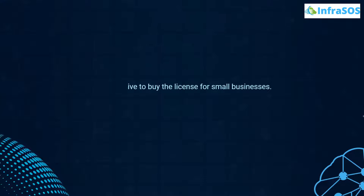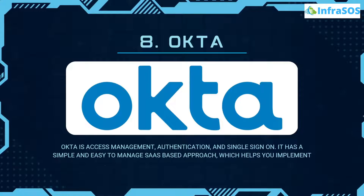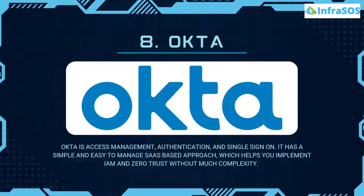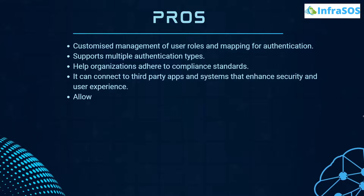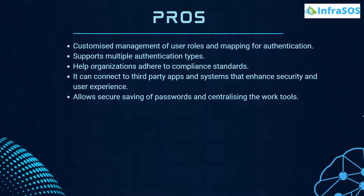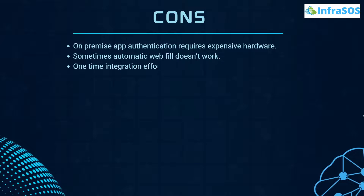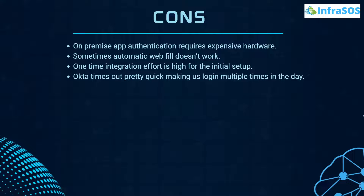At number 8 we have Okta, which is an access management, authentication, and single sign-on solution. It has a simple and easy-to-manage SaaS-based approach which helps you implement IAM and Zero Trust without much complexity. Pros include support for multiple authentication types, customized management of user roles and mapping for authentication, helping organizations adhere to complicated standards, and allowing secure saving of passwords and centralizing work tools. Cons include that on-premise application authentication requires expensive hardware, sometimes the automatic web fill does not work, and the one-time integration effort is high for the initial setup.